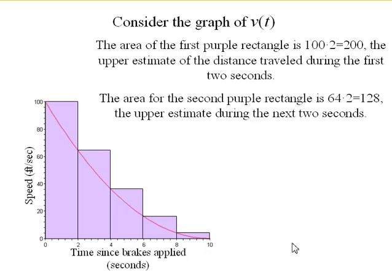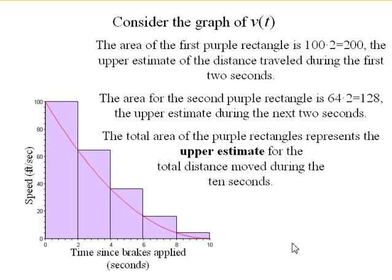Now, the total area of all 5 rectangles combined gives us an upper estimate for the total distance traveled during the 10 seconds. We call these left-hand sums.